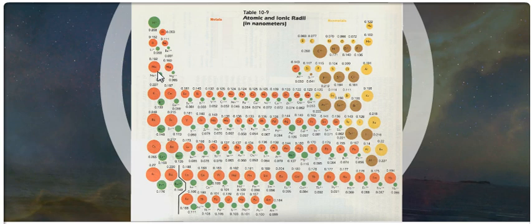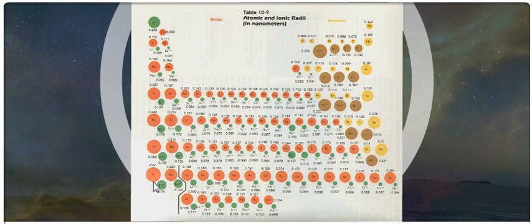As you move from left to right across the periodic table, atomic radius decreases. Ionic radius also decreases until you get to non-metals, then it skyrockets and decreases again. As you move from top to bottom, it's the same as atomic radius — you have more shells around the nucleus, and therefore both atomic and ionic radius increase as you move down the periodic table.